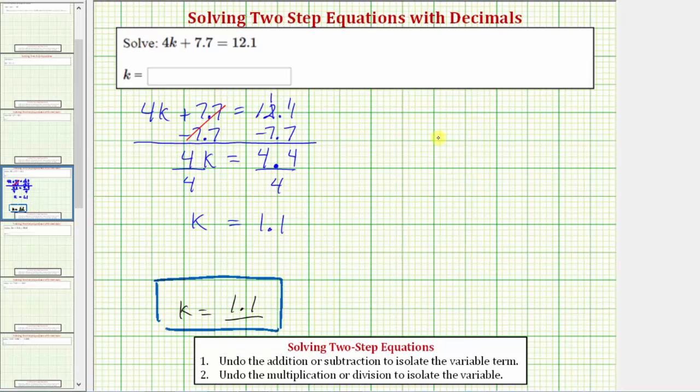A second method would be to clear the decimals from the equation before solving. Beginning with the original equation, we have 4k plus 7.7 equals 12.1. Because we have at most one decimal place, we can clear the decimals by multiplying both sides of the equation by 10. Let's go ahead and multiply the left side by 10 and the right side by 10.